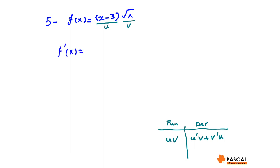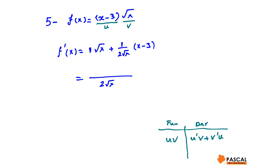Therefore f prime of x is 1 times root x plus 1 over 2 root x times x minus 3. Taking the common denominator of 2 root x, f prime of x can be written as 2x plus x minus 3 over 2 root x, which simplifies to 3x minus 3 over 2 root x.